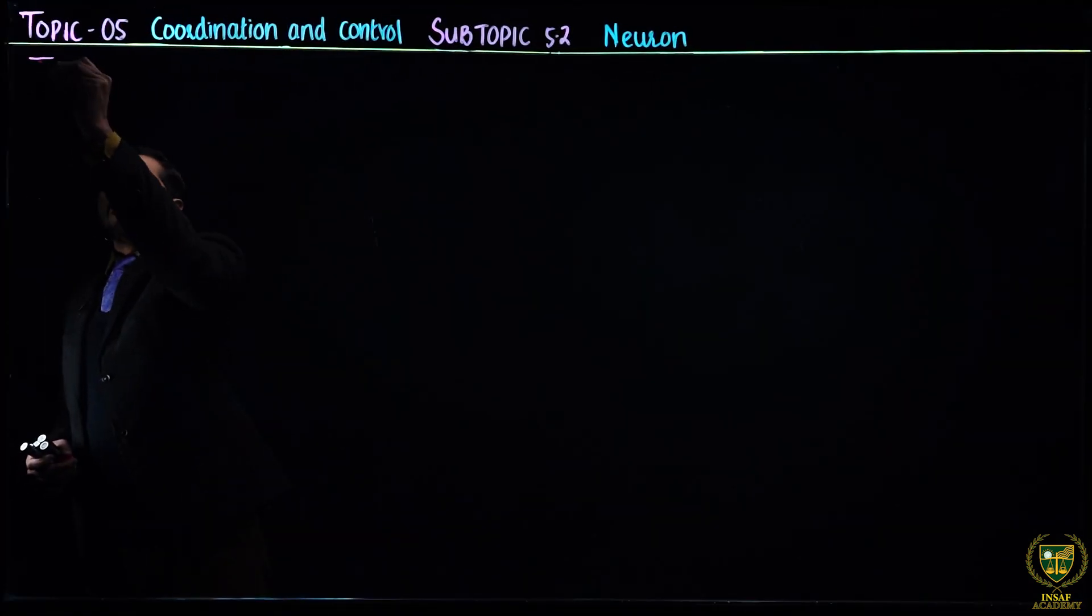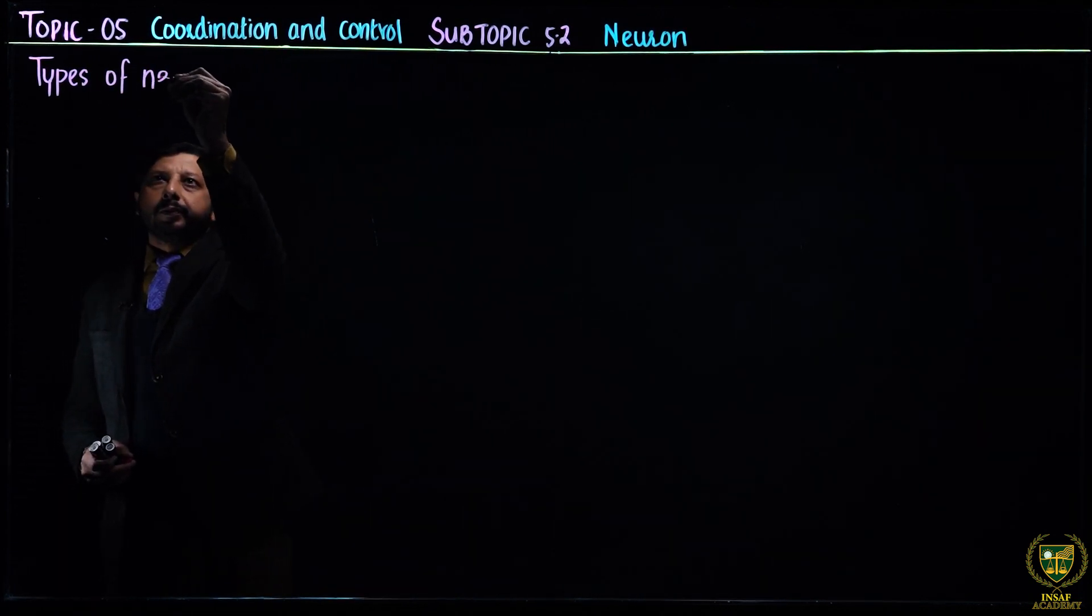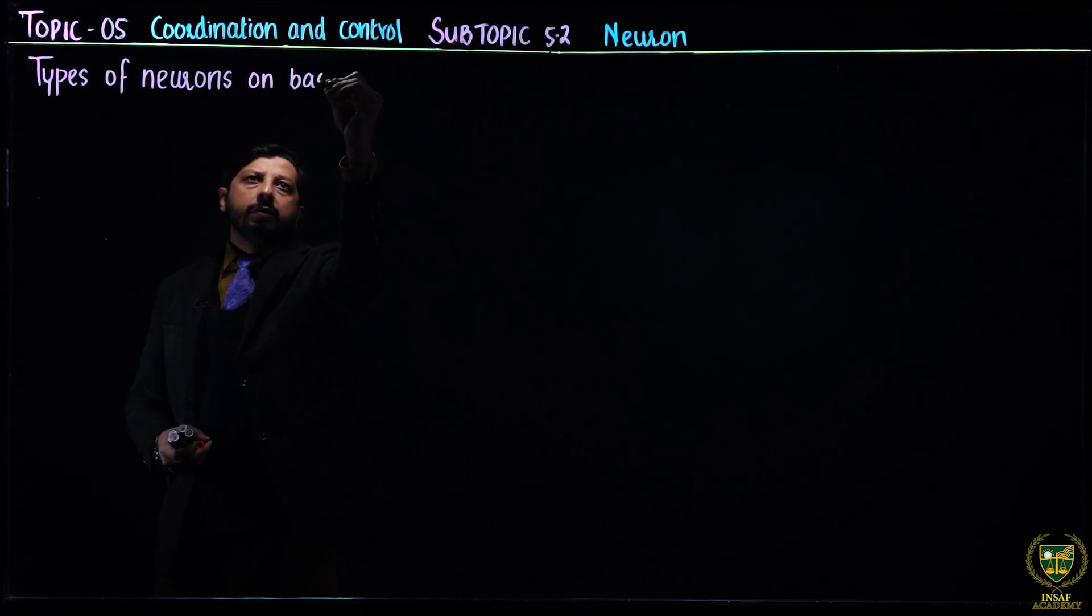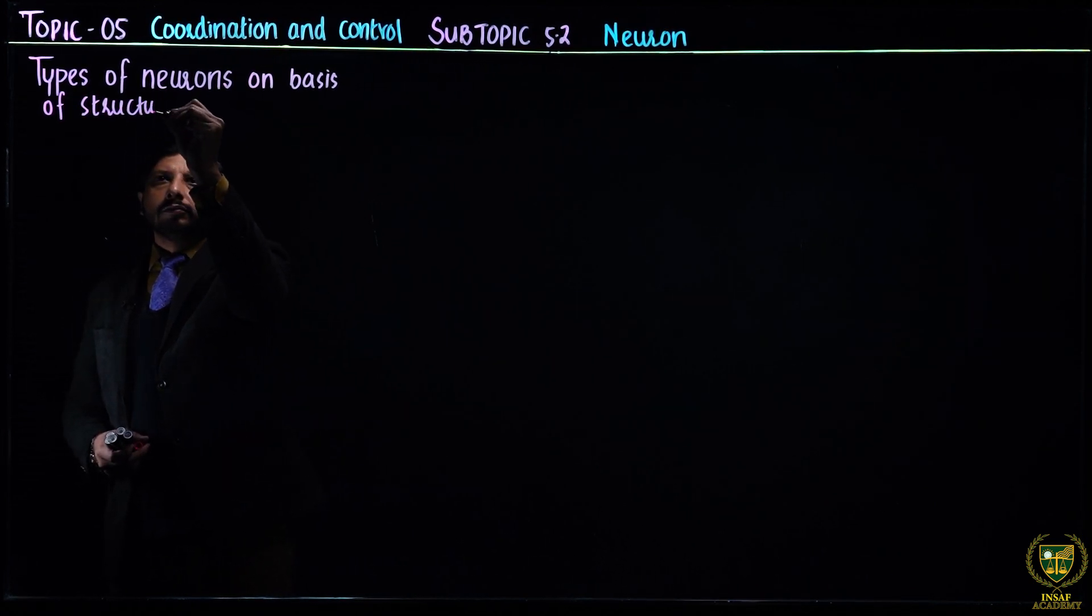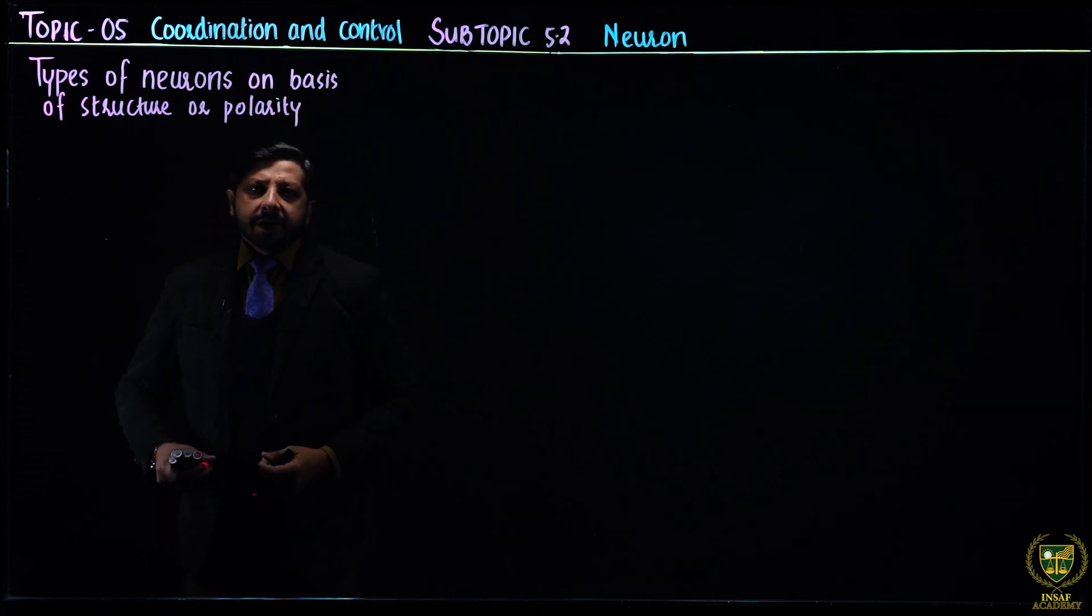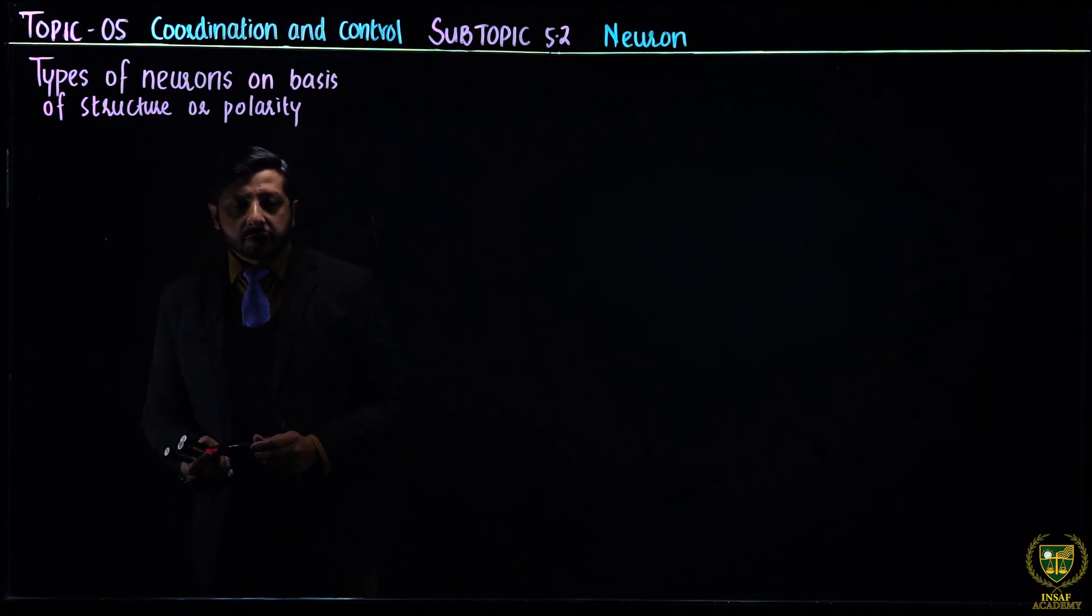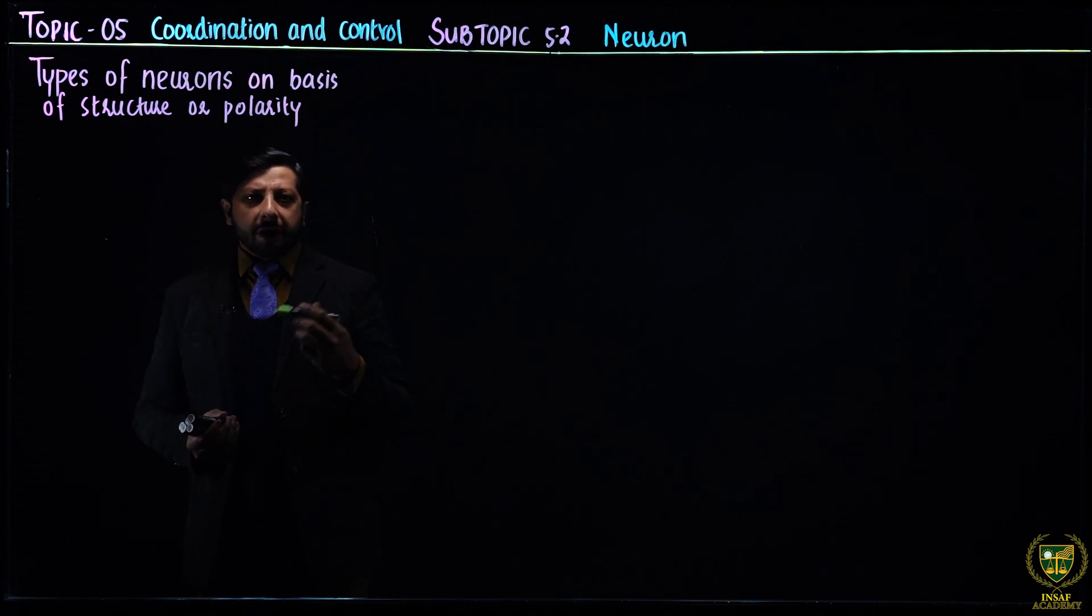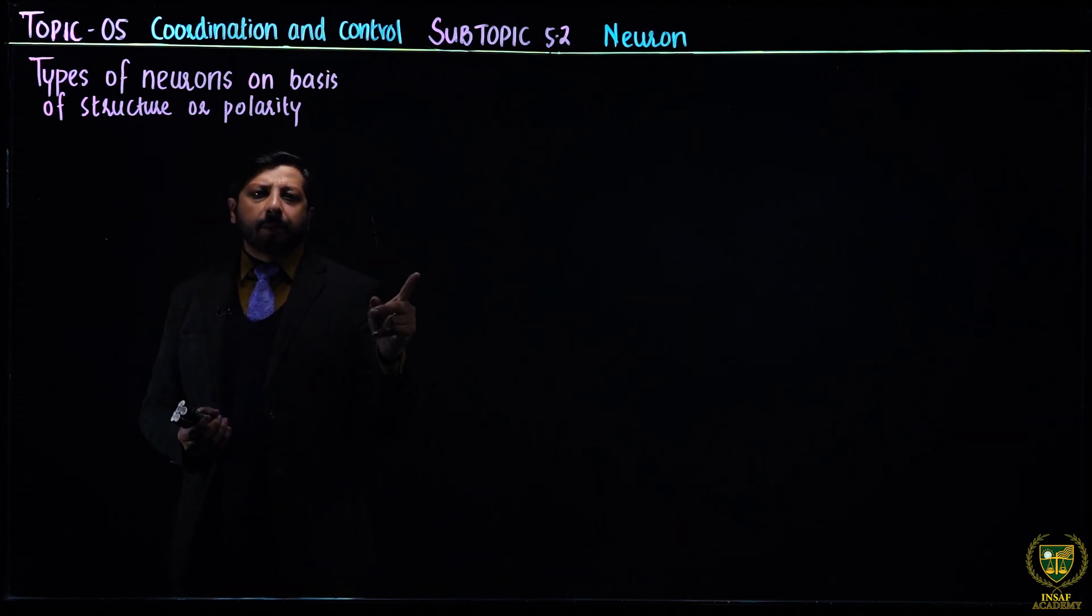The types of neurons on basis of structure and polarity. Previously we discussed functional classification - sensory neurons, motor neurons, and interneurons which are called relay neurons and associative neurons. Today's point is structure or polarity. On the basis of polarity there are three types of neurons: unipolar, bipolar, and multipolar.